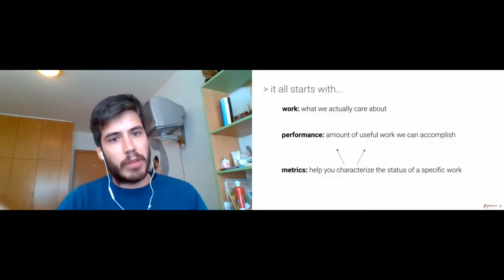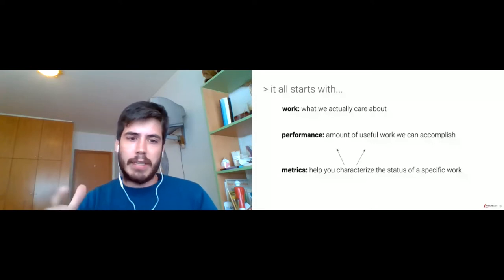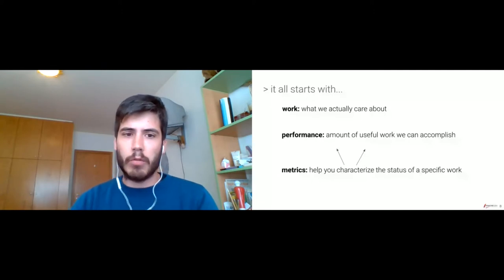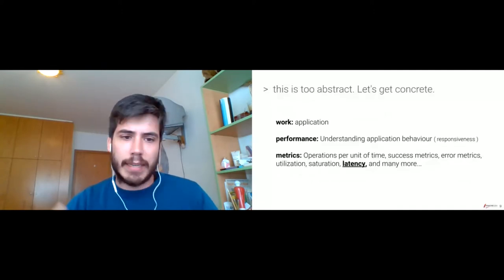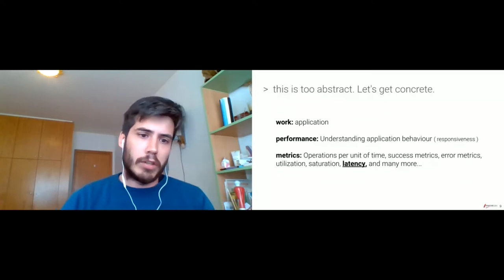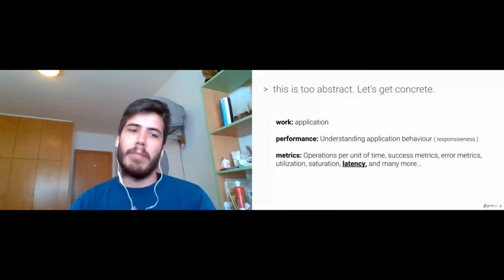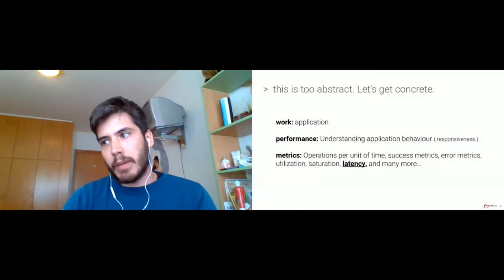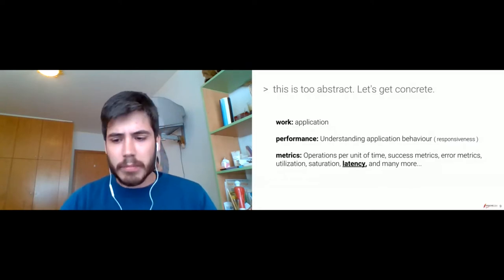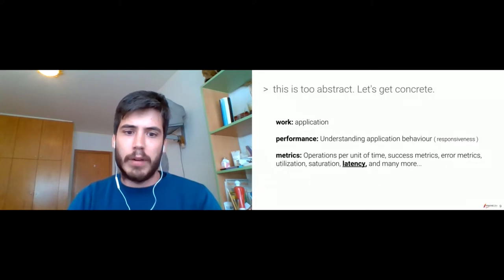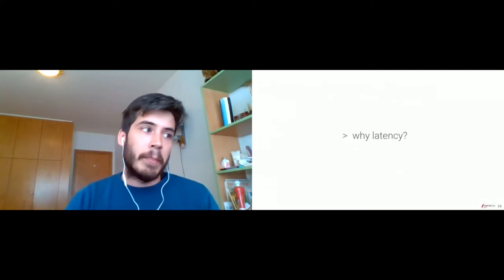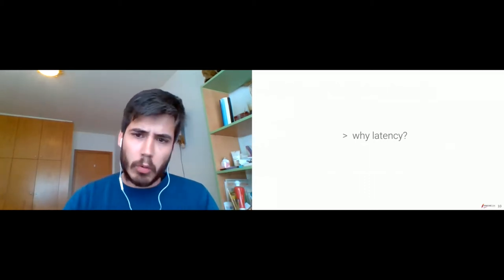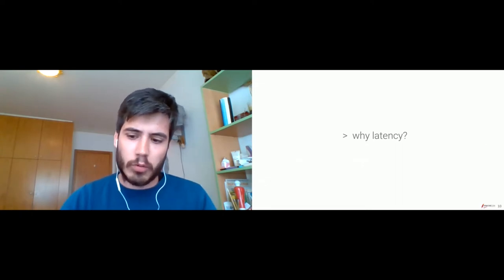Removing some of the abstraction and giving an example: imagine that you have an application and you want to understand its behavior. You can focus performance engineering around several metrics, some of them like operations per unit of time — like requests per second — success metrics, error metrics. And one very, very important one that mostly all engineers focus upon is latency. Why is this metric so important when compared to the others that we can use to understand our system?